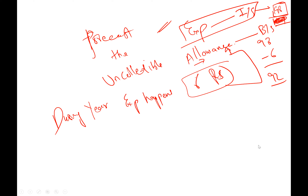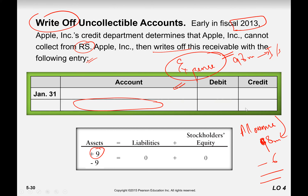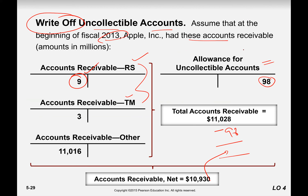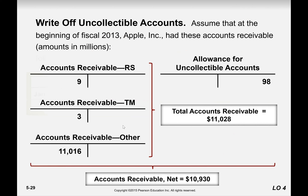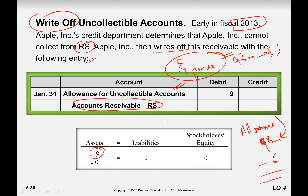If our actual expense is greater than the allowance, then we made a bad forecast or bad planning. If actual expense is within the allowance, we are good planners. Anything that happens will be charged to the allowance. The allowance decreases because this is a contra account — a contra account to accounts receivable.